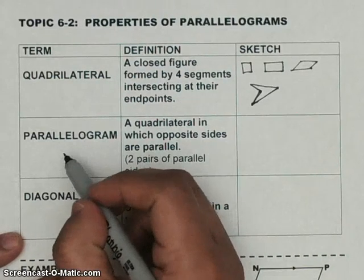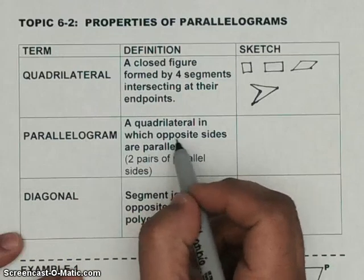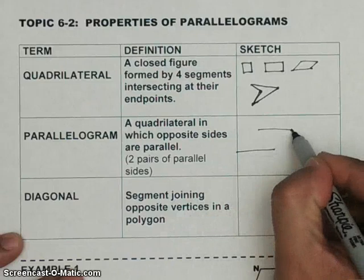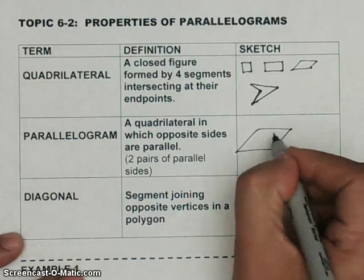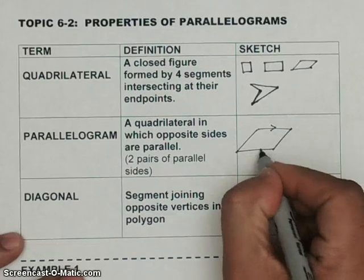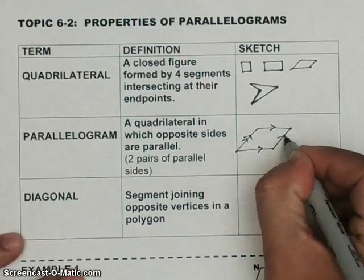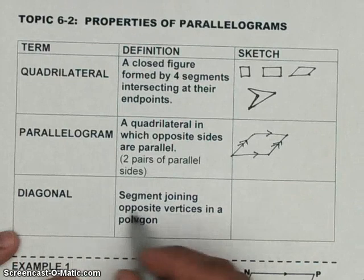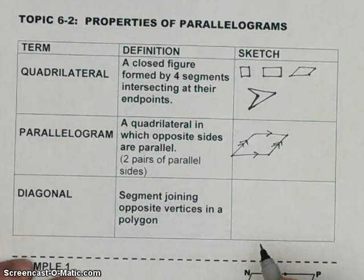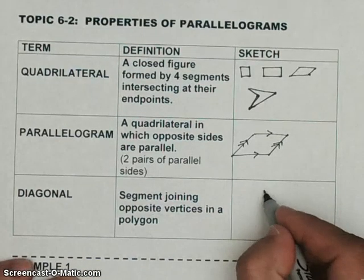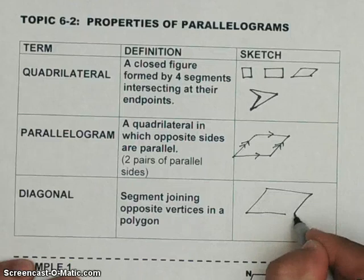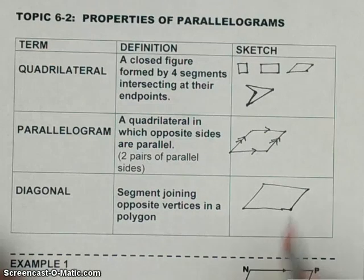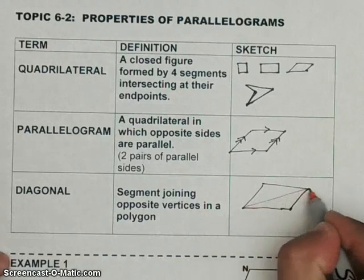A special kind of quadrilateral is a parallelogram, in which opposite sides are parallel. So you would have something like this, and you'd say this side is parallel to this side — these two are opposite and parallel. A diagonal is a segment joining opposite vertices in a polygon. So if I draw my parallelogram, this segment here would be considered a diagonal.